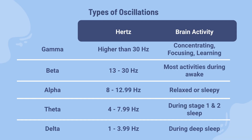There are several types of neurooscillations, each with its own unique frequency range and function. The most well-known are gamma, beta, alpha, theta, and delta oscillations.